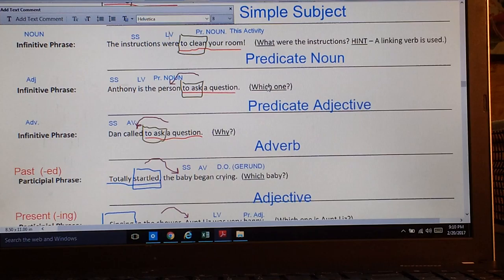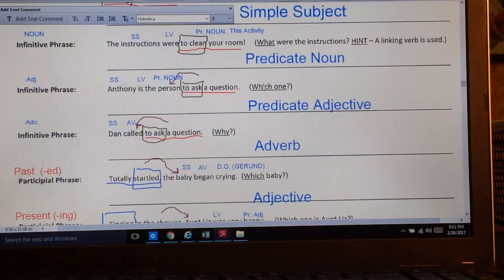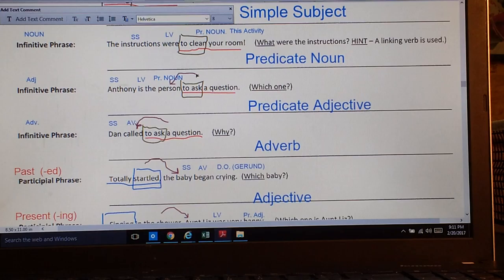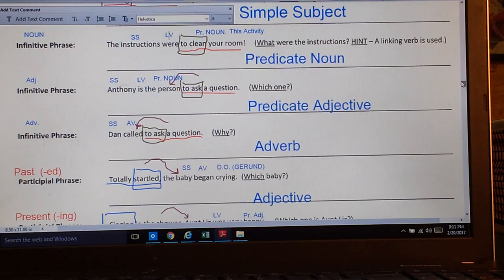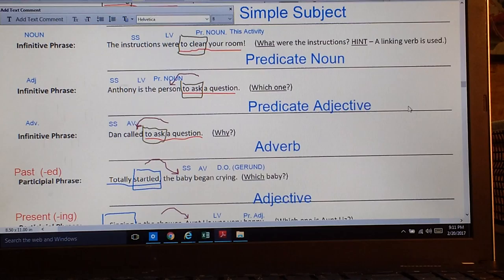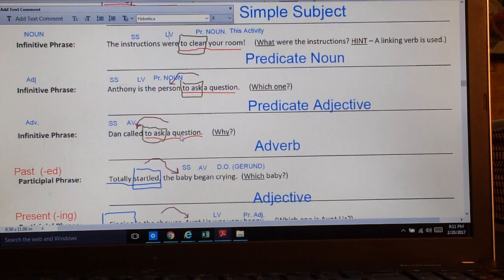The next one down, another infinitive phrase. This one's going to act like an adjective, which means it will describe a person. Anthony is the person. I might ask the adjective question, which one? He's the one to ask a question. Or is he the one to answer the question? Or is he the one to give up? Which kid is Anthony? Which one? He's the one to ask, infinitive, to ask a question is my infinitive phrase. And it's referring back to the predicate noun person. You can see the different things that are already labeled there. Don't want to get too far off track, so let's go to the next infinitive phrase.